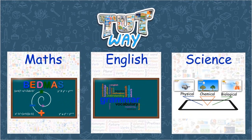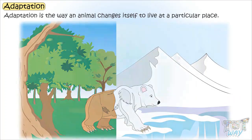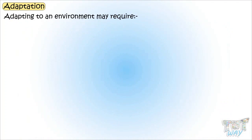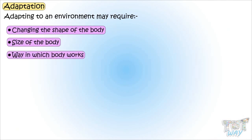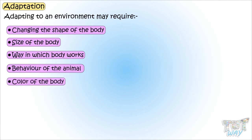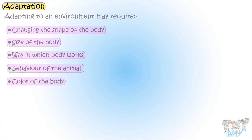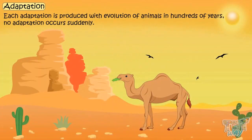Adaptation to an environment may require change in the shape of the body, size of the body, way in which the body works, behavior of the animal, and even color of the body. Each adaptation is produced with evolution of animals in hundreds of years.